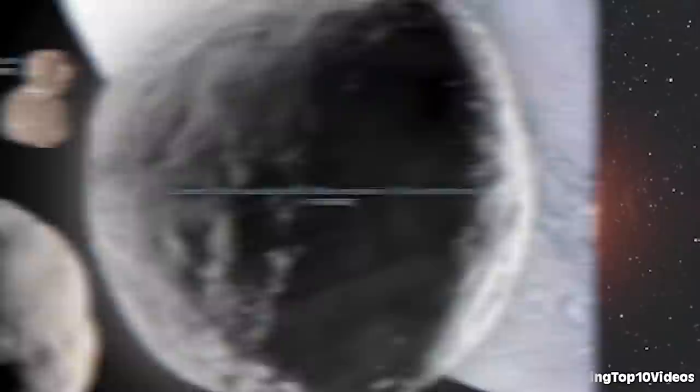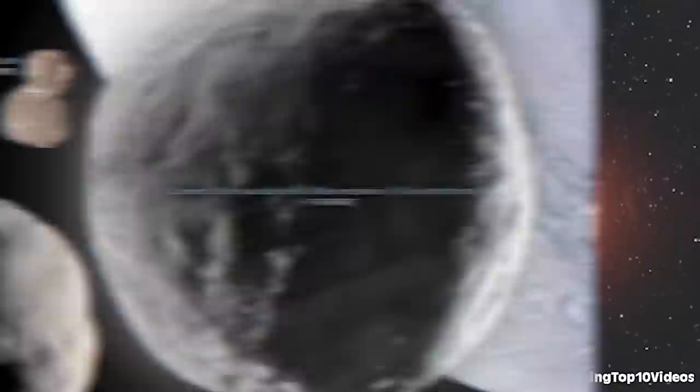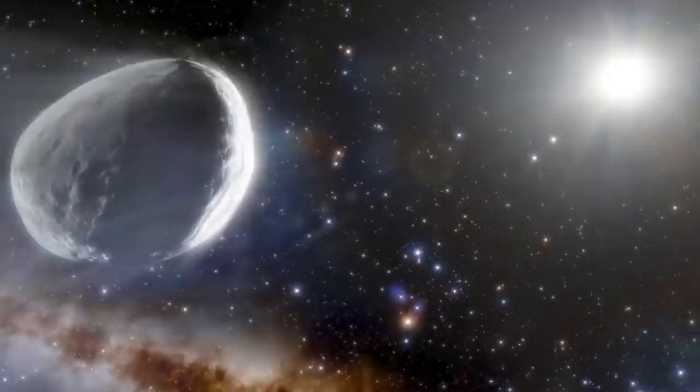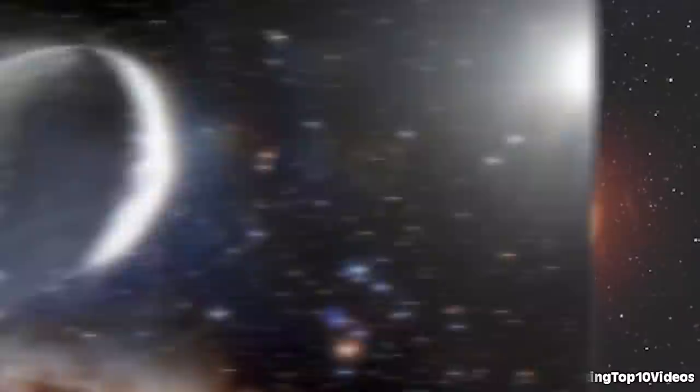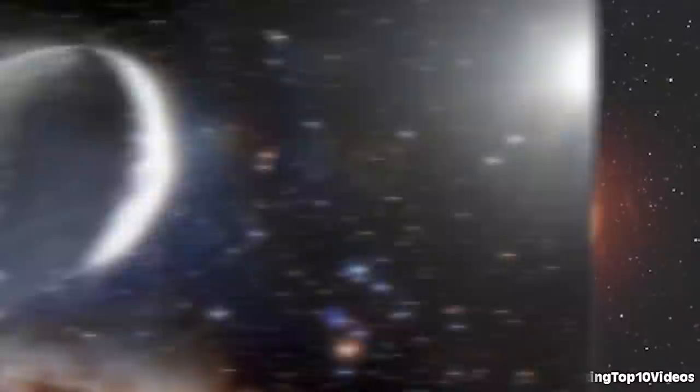He went to his advisor, a cosmologist named Gary Bernstein, and he told them to look into it. 10 times wider than a typical comet, this thing is huge. Last time it was near our sun was a good 3 million years ago, and now it's back. Well, in 10 years it'll be close. So get your wishes ready. All you have to do is say the comet's name three times fast and you're set.